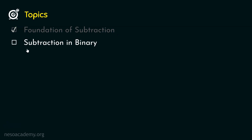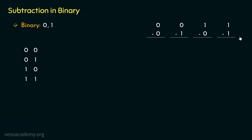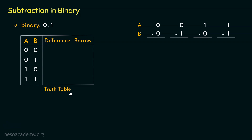Let's now focus on subtraction in binary. In binary we have the symbols 0 and 1. Just like addition, we will try to find out the patterns by subtracting both symbols from 0 and from 1. Let's call the minuend A and the subtrahend B. From this, I believe you already have the idea that we are going to create a truth table, which — just like the truth table of addition — will help us perform all possible subtractions in the binary number system.